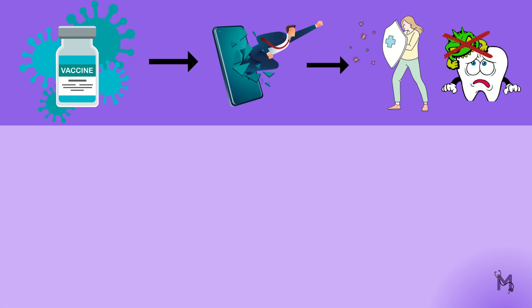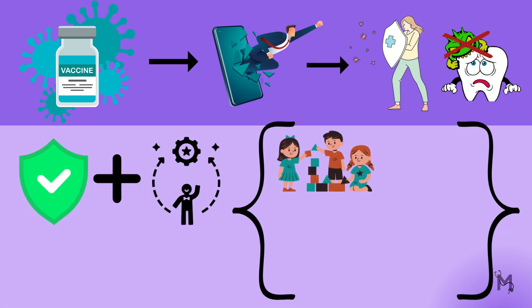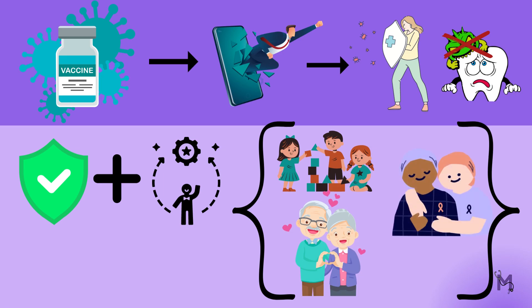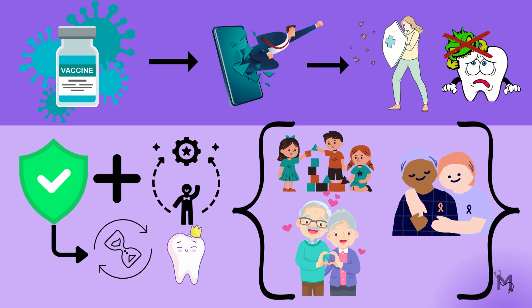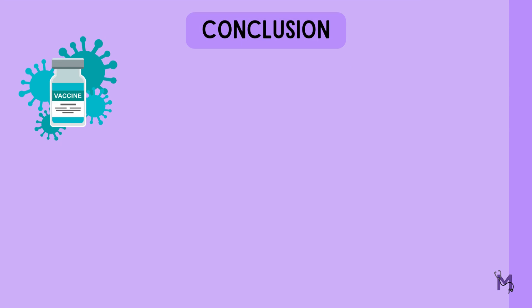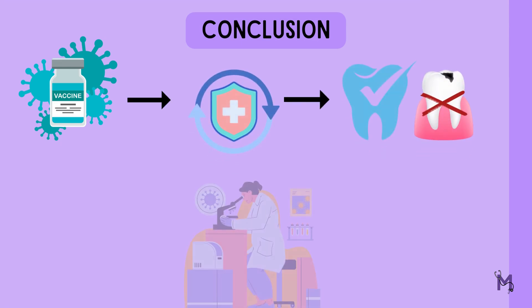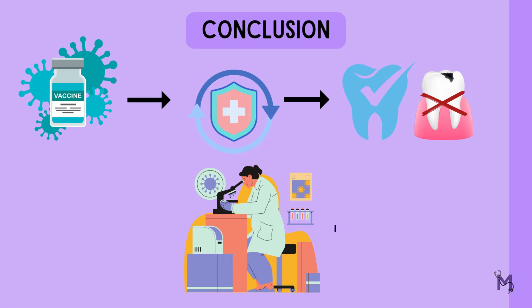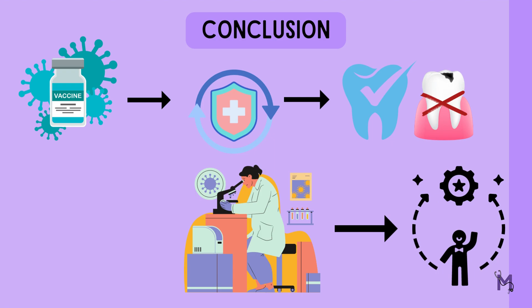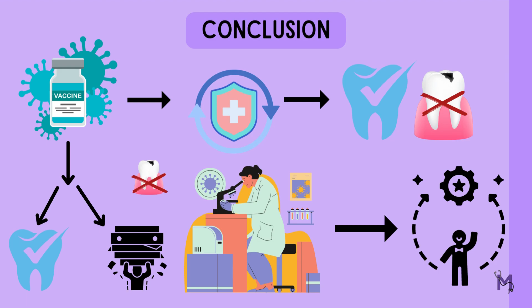While a caries vaccine would be a significant breakthrough in the prevention of tooth decay, there are still challenges that need to be overcome. One challenge is ensuring that the vaccine is safe and effective in all populations, including children, older adults, and those with compromised immune systems. Another challenge is developing a vaccine that can provide long-lasting protection against tooth decay. In conclusion, the caries vaccine is a promising approach to preventing tooth decay. While more research is needed, the potential benefits are significant — by reducing the incidence of tooth decay, the caries vaccine could improve oral health and reduce the burden of dental disease on individuals and communities.